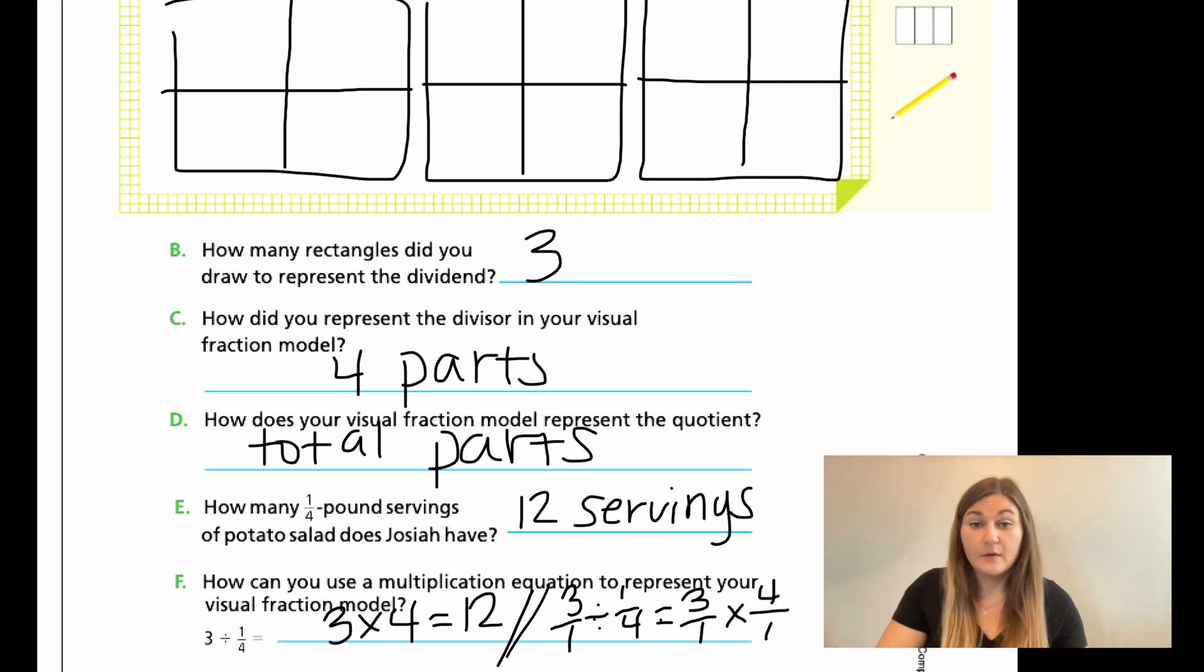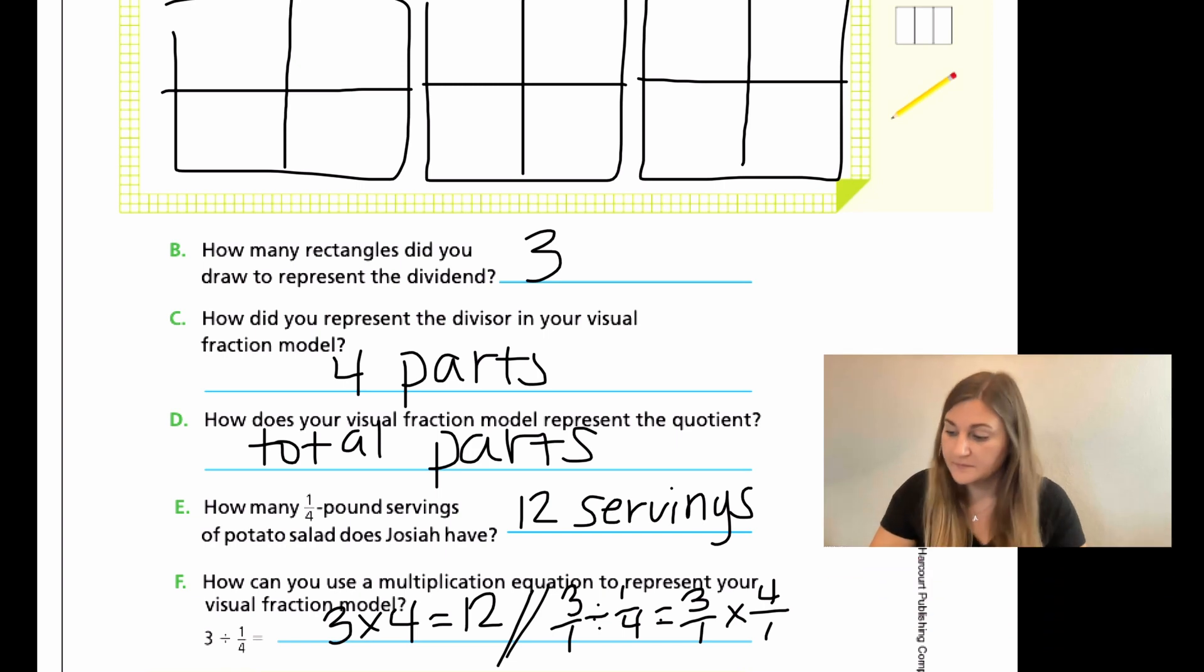So then if I were going to solve this, I would multiply the numerators and say three times four equals 12. And then one times one is one. So I'd end up with 12 over one. That's why this question is having you do the related multiplication, because that's what you're actually doing when you're solving a division problem by a fraction, as you're flipping and multiplying. Just another way of looking at it.